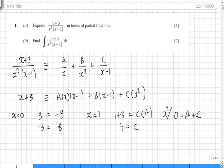And C times x squared. Nothing is generated from the B term. So we know that 0 equals A plus 4, therefore A equals minus 4.